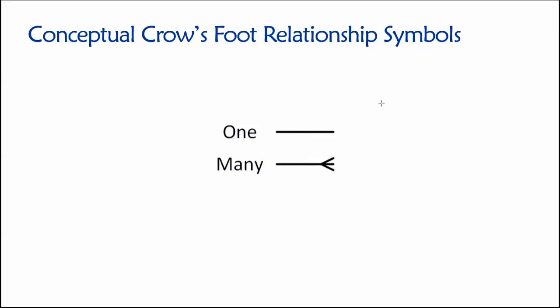So the idea is that we're going to have some tables or some entities, and then we'll have some sort of relationship line that interconnects. And what we're going to do then is use these various symbols to indicate the nature of the relationship on both sides of that line.